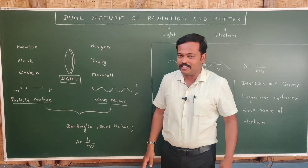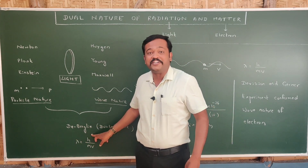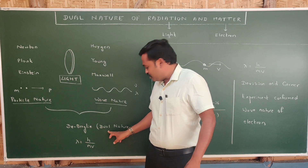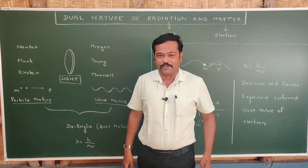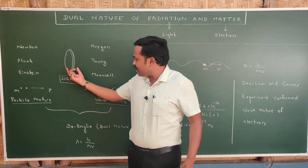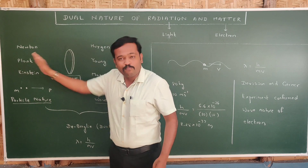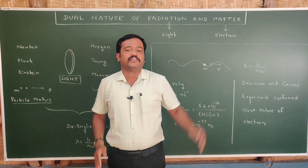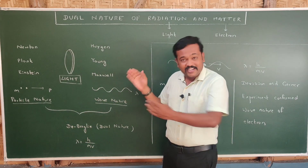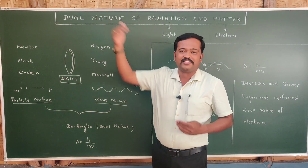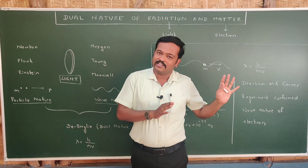Then who is correct? That is the next question. So there came a scientist called de Broglie. He came with a concept called dual nature — meaning light has both natures: particle nature as well as wave nature. These natures are like two sides of a coin. When Newton, Planck, and Einstein did their experiments, they saw particle nature and did not consider wave nature. When Huygens, Young, and Maxwell did their experiments, they considered wave nature and did not consider particle nature. De Broglie said that light is made up of both particle as well as wave nature.